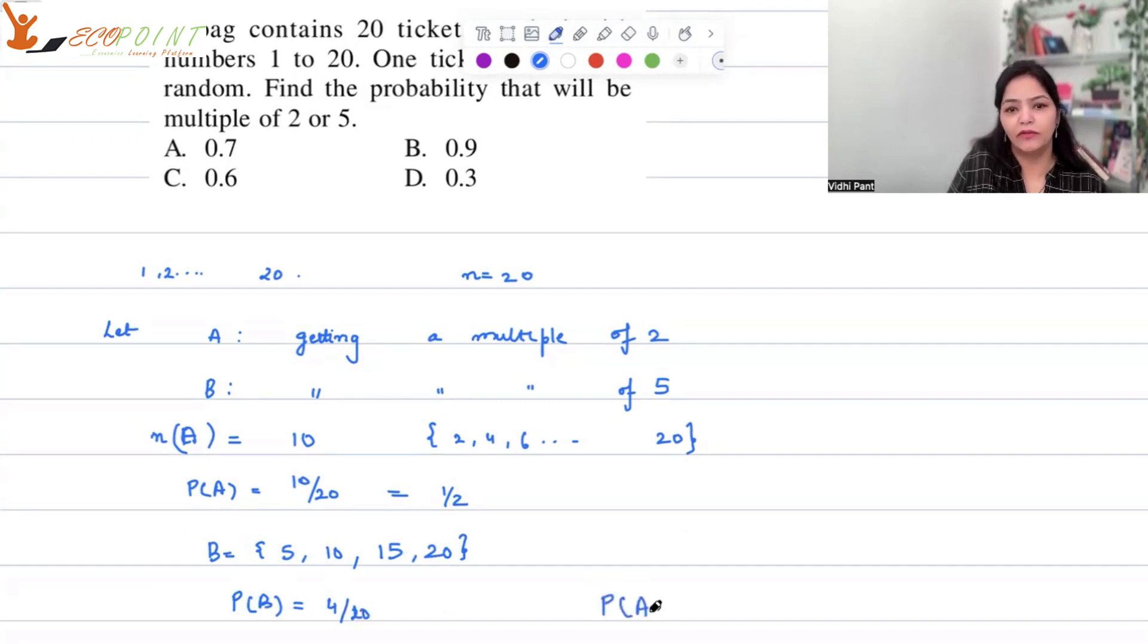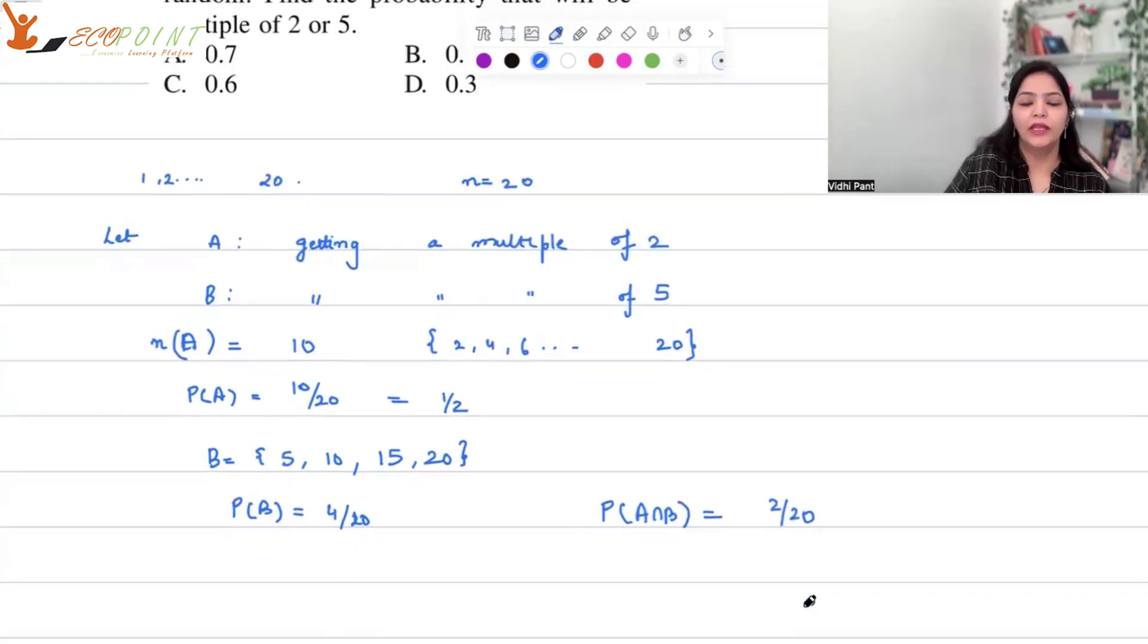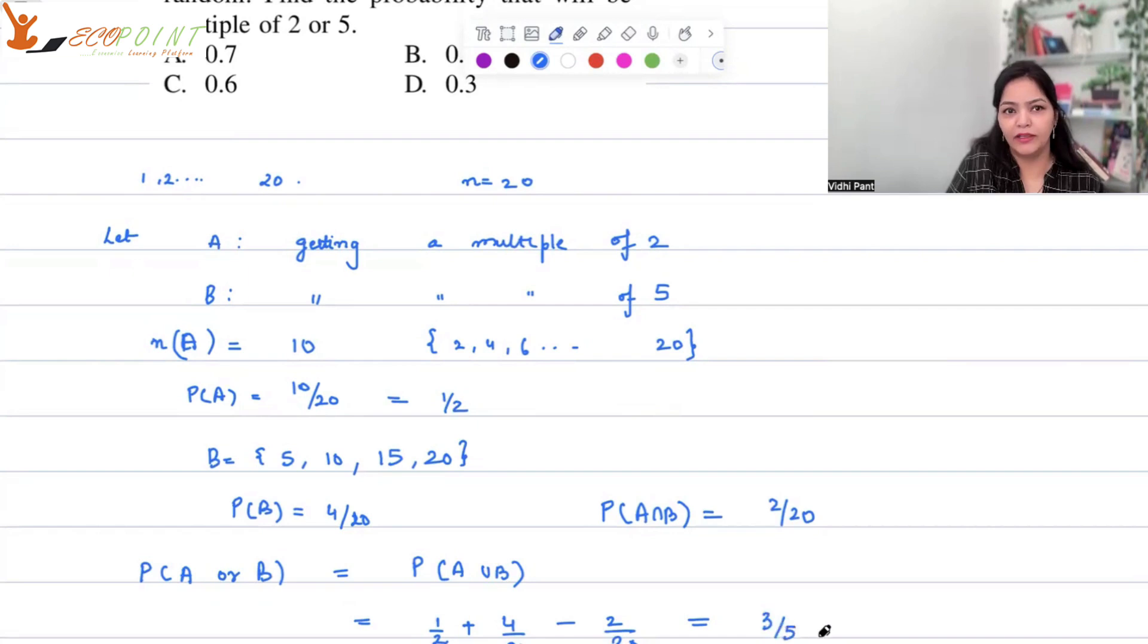And clearly probability of A intersection B has 2 entries out of 20. So probability A or B is same as saying probability A union B. This means it is 1 by 2 plus 4 by 20 minus 2 by 20, and that will turn out to be 3 by 5, which is 0.6. So C is the correct answer.